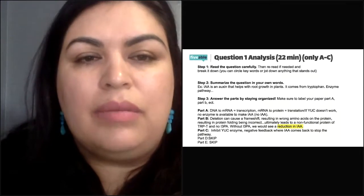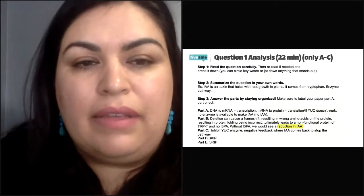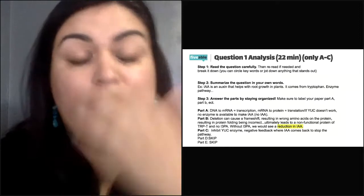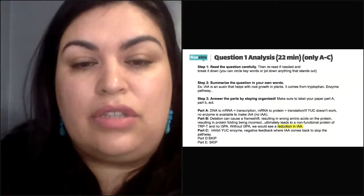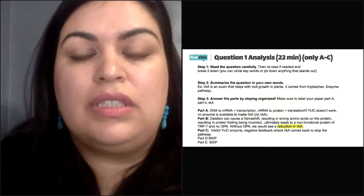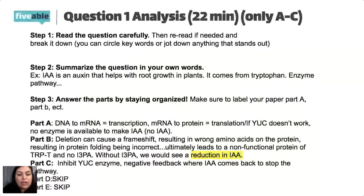Part A asks us to circle one arrow that represents transcription on the template pathway, and then identify the molecule that would be absent if the enzyme YUC is non-functional. Remember: when we go from gene to mRNA, that's transcription — going from DNA to the copy of DNA known as messenger RNA. If we go from mRNA to protein, that's translation. So we circle the arrow between gene TRPT and the mRNA; if you also circle the arrow between gene YUC and the mRNA, that would also be correct.